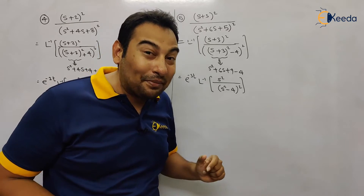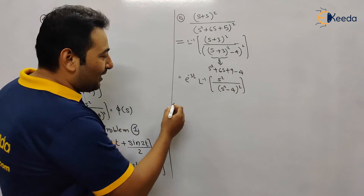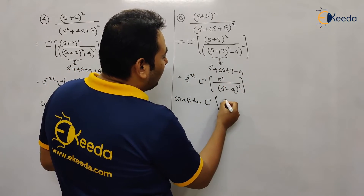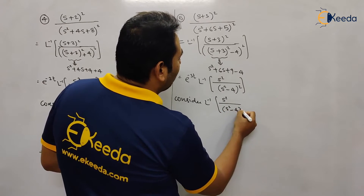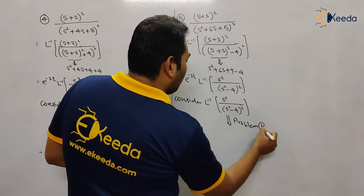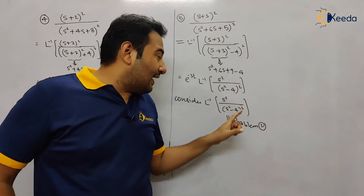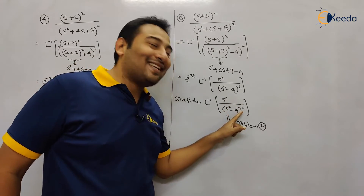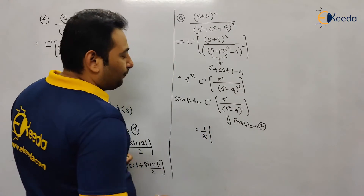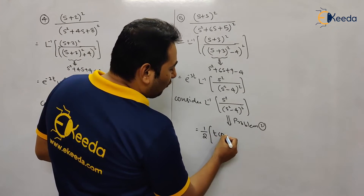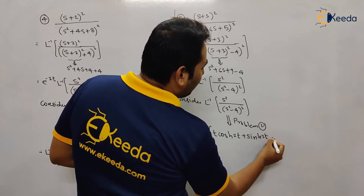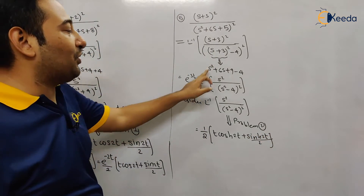Did you find this example similar to what we did in problem number two? Yes, it's exactly similar to problem number two. The shifting is s shifted by plus 3, so e^(−3t) comes out. Forgetting about the shifting, it becomes s² upon (s² − 4) the whole square. Follow problem number two, where it was s² upon (s² − a²) the whole square, and the solution was t·cosh(at) + sinh(at)/a, with a = 2.